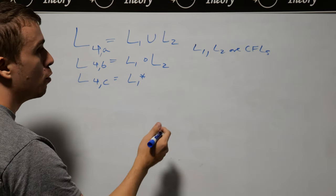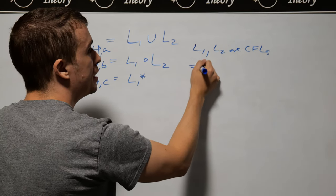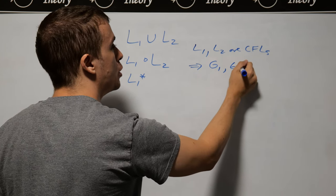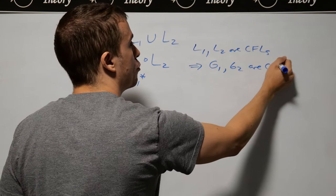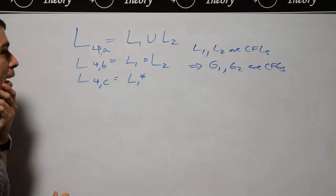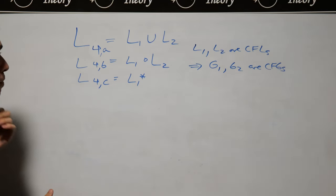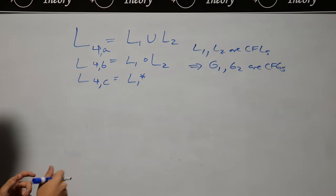So if they're context-free languages, then we have two grammars for them. So G1 and G2 are context-free grammars for them. And what we want to do is we want to make a context-free grammar for these three languages. And it's actually fairly easy to do.